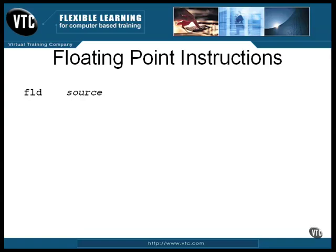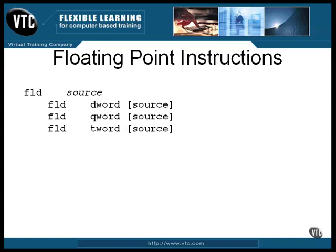The FLD instruction takes a floating point number from memory and pushes it onto the stack. It's necessary to specify the size. If you specify double word, you get the smallest size — a 32-bit floating point number. A quad word is a 64-bit number, and a T word, a 10-byte word, is a number in the 80-bit format.